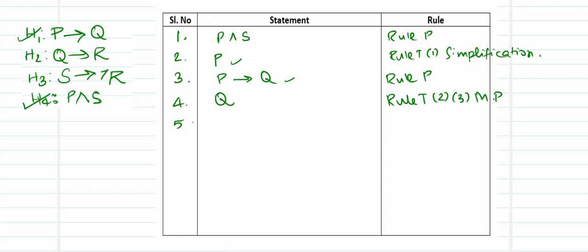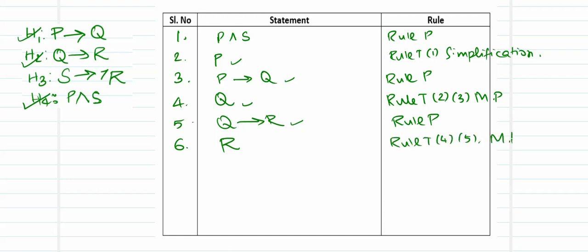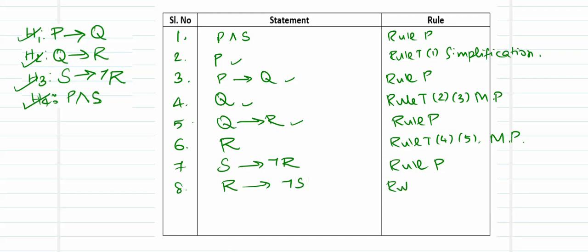Step 4: from p (step 2) and if p then q (step 3), by modus ponens we get q — rule T of steps 2 and 3. Step 5: introduce hypothesis number two, if q then r — rule P. Step 6: from q (step 4) and if q then r (step 5), by modus ponens we get r — rule T of steps 4 and 5. Step 7: introduce hypothesis number three, if s then negation r — rule P.